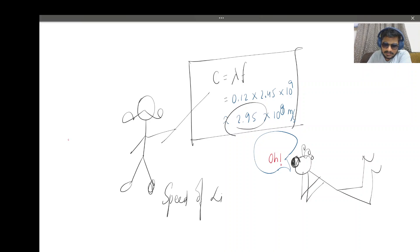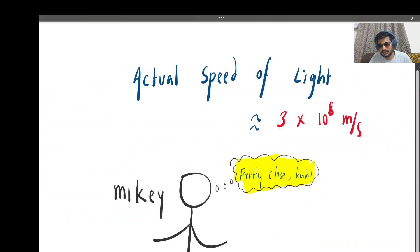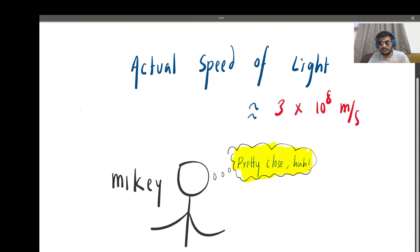The speed of light I calculated is 2.95 times 10^8, but the actual value is 3 times 10^8, which is pretty close. We could measure the speed of light just in a kitchen, and Mikey is happy.